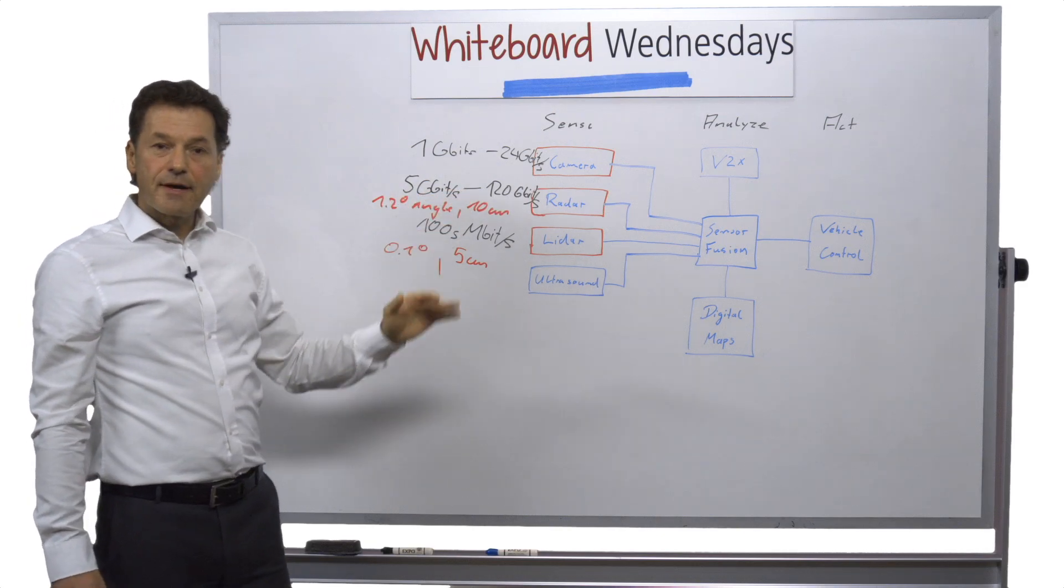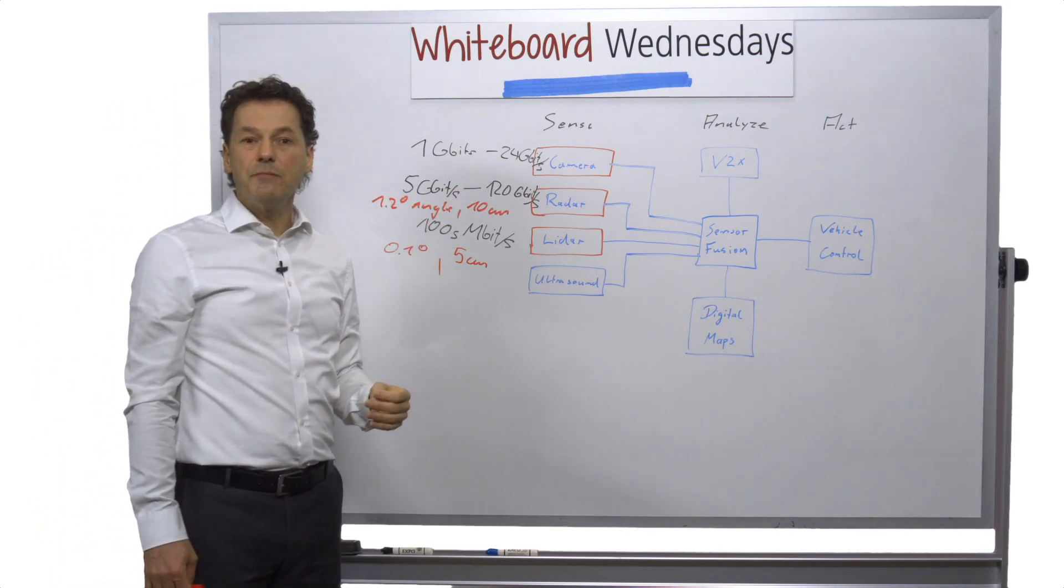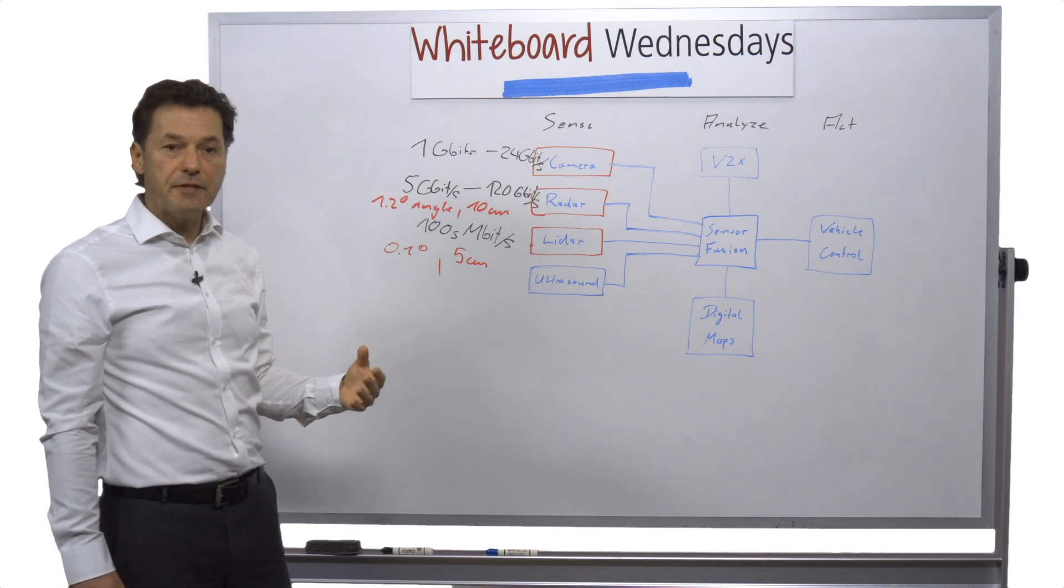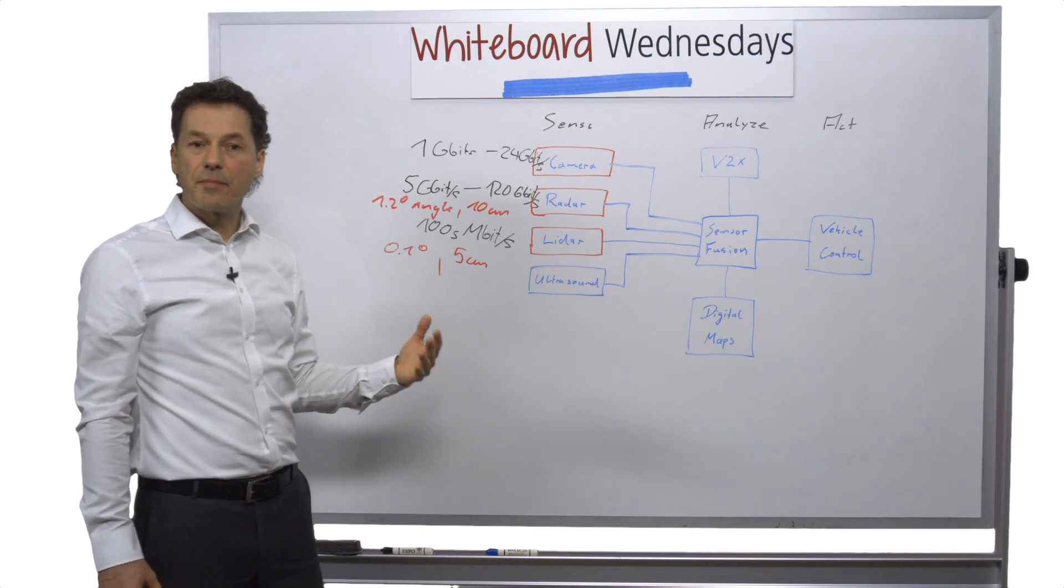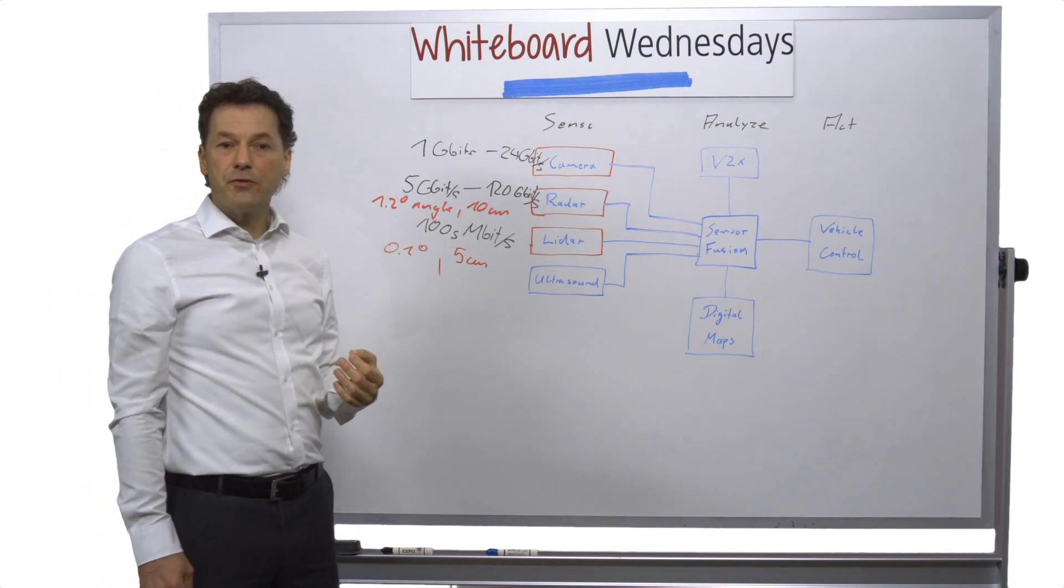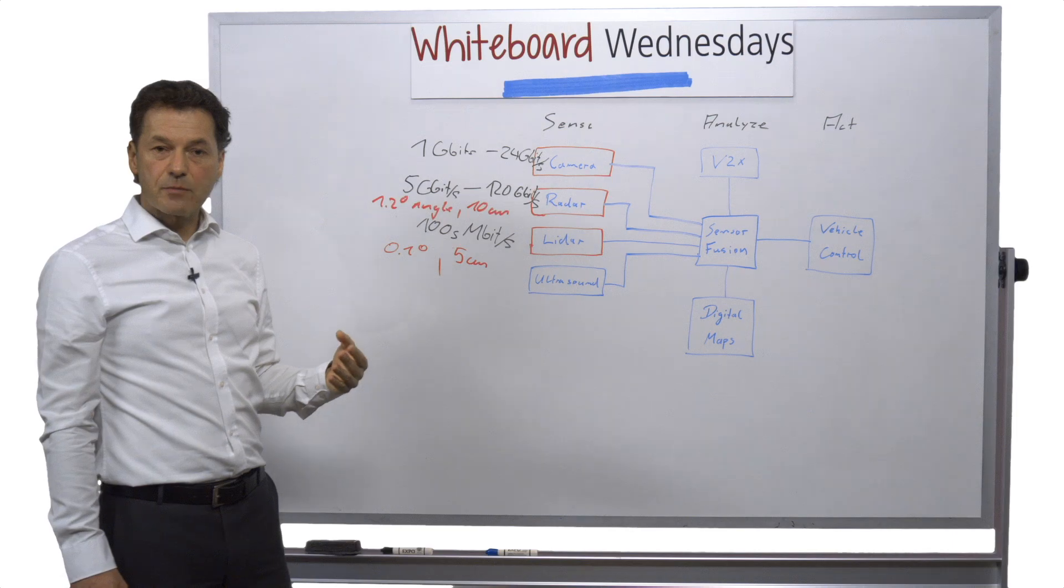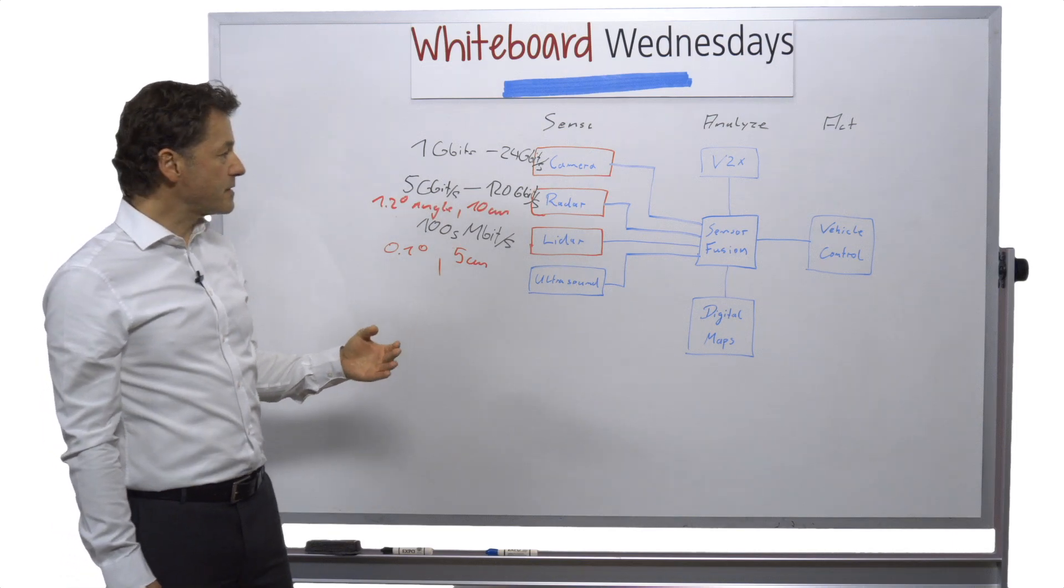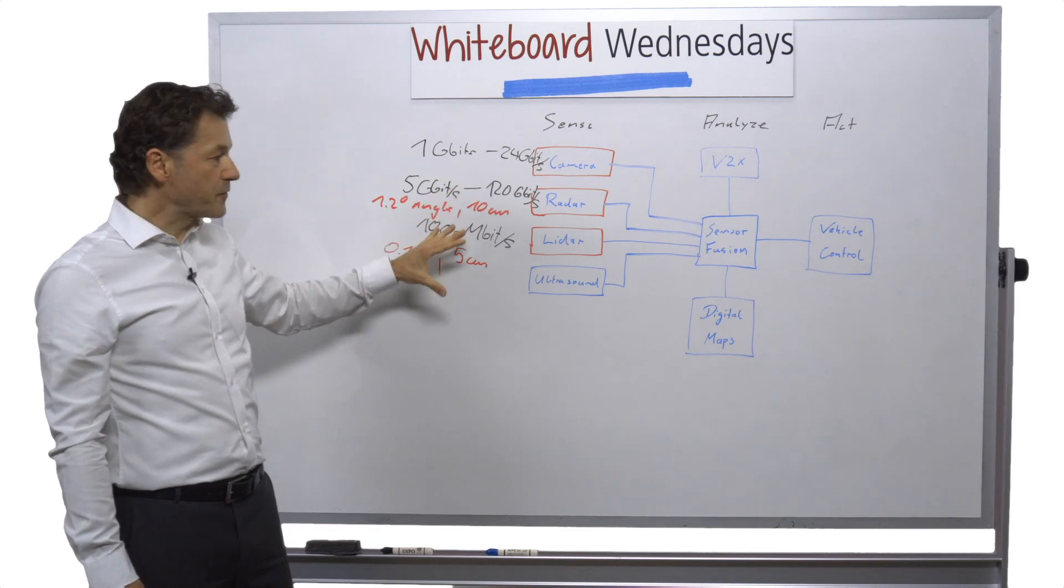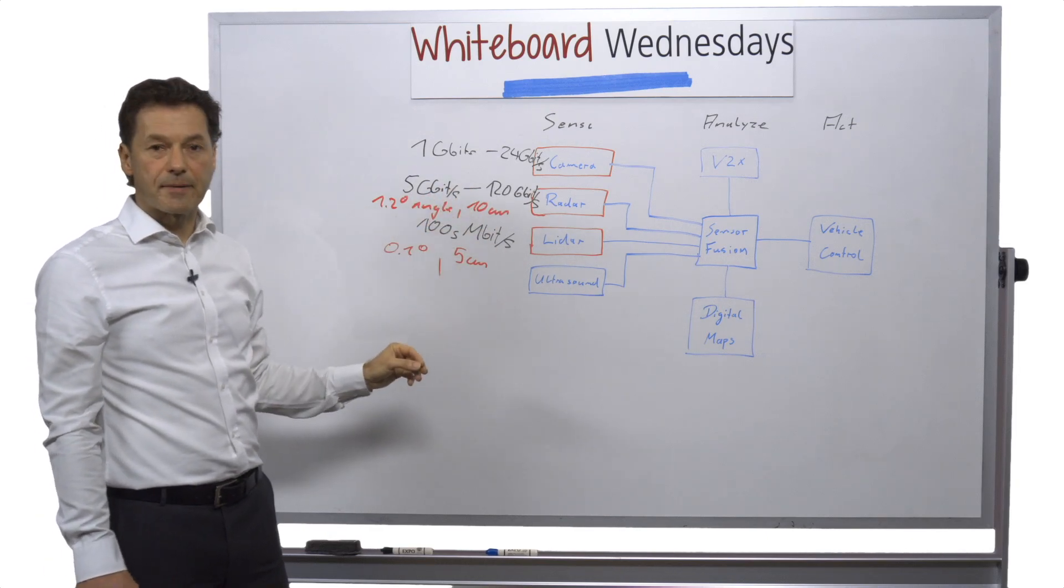On the radar side, especially for digital beamforming, you need to calculate a lot of FFTs, matrix, linear algebra. The Tensilica Fusion Q6 processor, which is our baseband processor, is very well suited to do exactly these types of calculations, which are also similar to LiDAR.